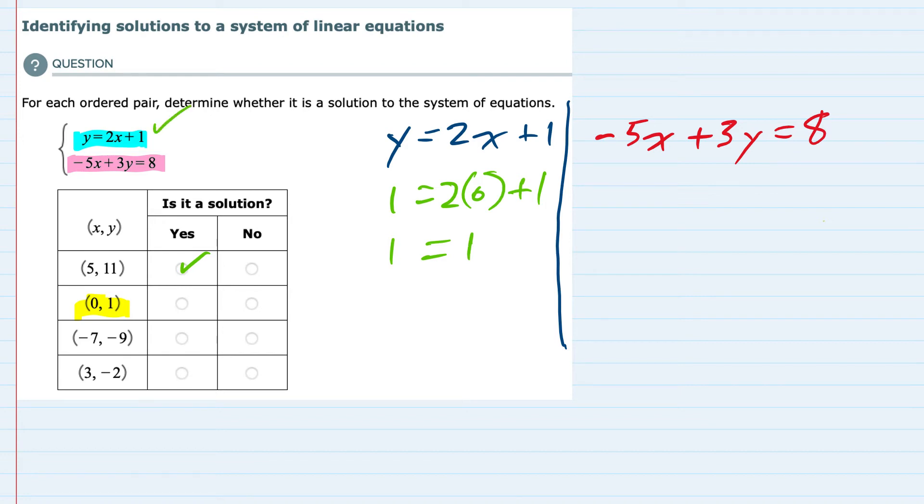Again, trying it in the second equation, x is 0 and y is 1. Do those two points work here? Negative 5 times 0 is 0 plus 3 times 1 is 3. Does that equal 8? In this case, no.